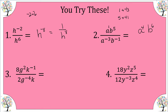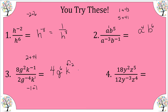Number three: eight divided by two is four. We have a base of G and a base of K. Applying the quotient rule: two minus negative four gives me six for the G base, and negative one minus one gives me negative two for K. The negative two is attached to K, so we end up with four G to the sixth over K squared.